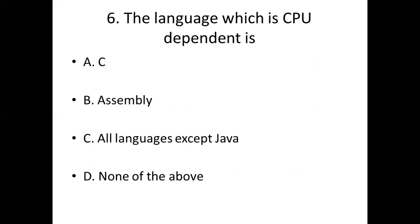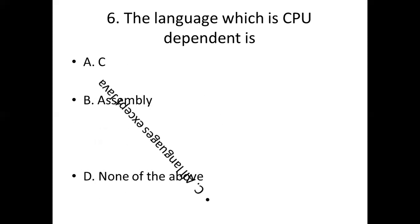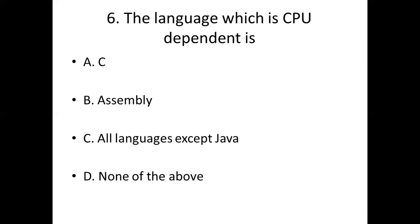Sixth bit: The language which is CPU dependent is. Option A: C. Option B: assembly. Option C: all languages except Java. Option D: none of the above. Answer: Option C — all languages except Java.